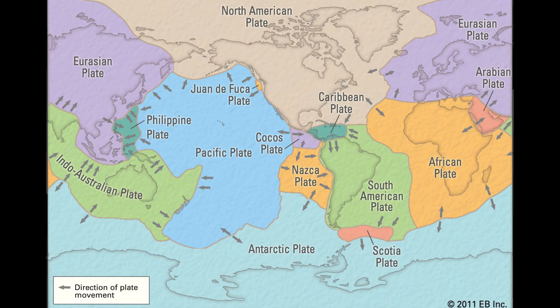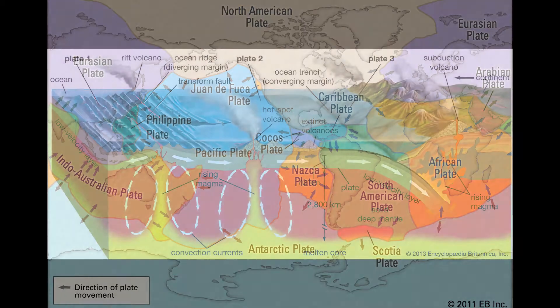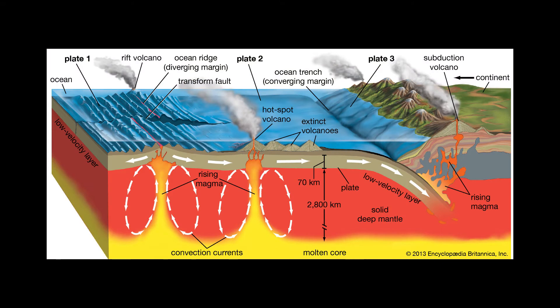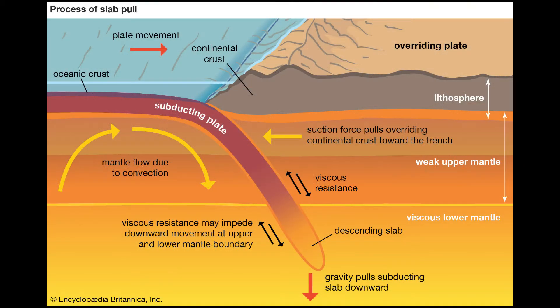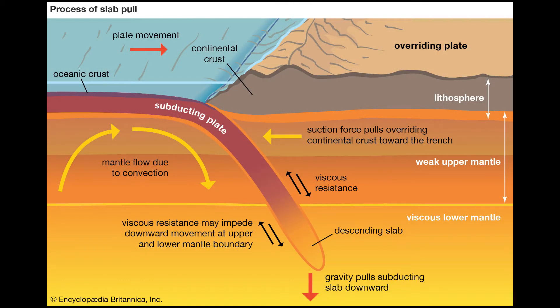The earth's crust is broken down into plates. It was once believed that convection currents in the mantle slowly move the crust around, but it's now thought that a mechanism called slab pull drives the movement of tectonic plates. Slab pull occurs where older, denser tectonic plates sink into the mantle at a subduction zone.